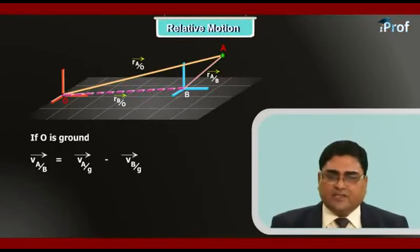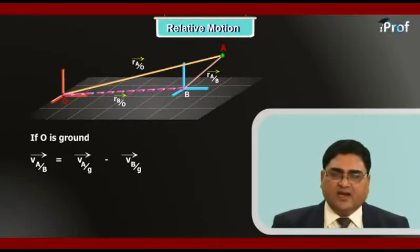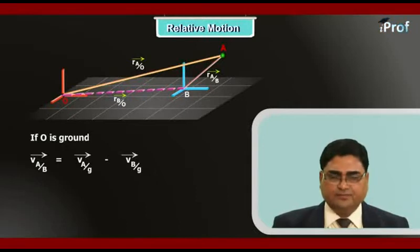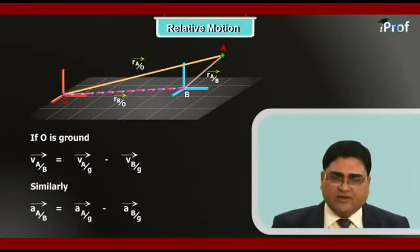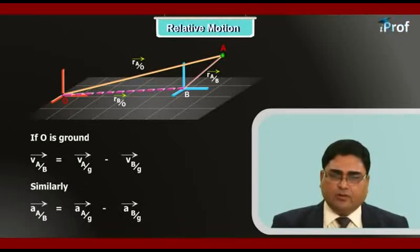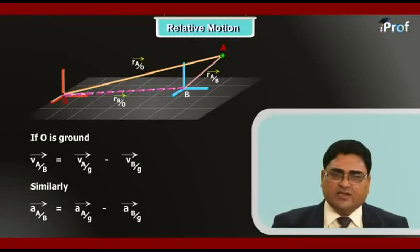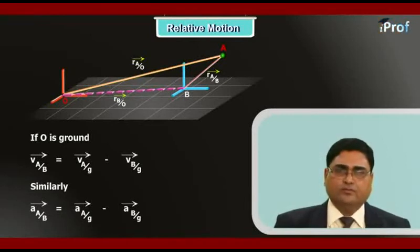If we again differentiate this velocity equation with respect to time, we can get the relation between relative accelerations. Similarly, the relative acceleration of body A with respect to body B equals the acceleration of body A with respect to ground minus the acceleration of body B with respect to ground.